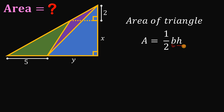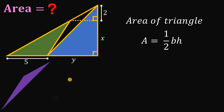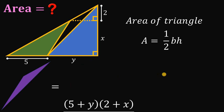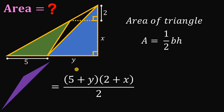The area of a triangle is given by the formula: one half times base times height. To find the area of the shaded region, this is equivalent to the area of the whole right triangle, which is one half times base times height. The base must be 5 plus y, and the height must be equal to 2 plus x.